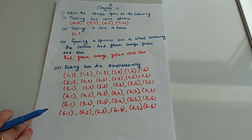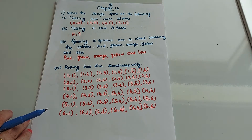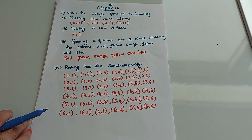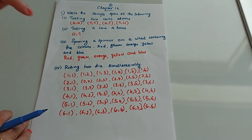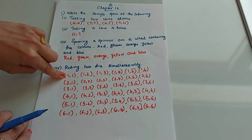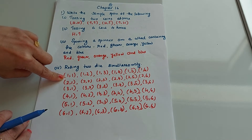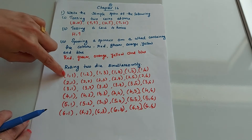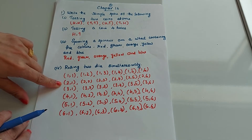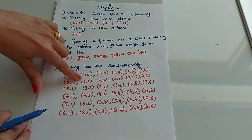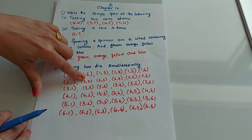Next, rolling two dice simultaneously. You have two dice; when you roll them, the outcomes start from one-one, one-two, and so on. The first number indicates the result on the first die, the second number indicates the result on the second die. So it goes: one-one, one-two, one-three, one-four, one-five, one-six, then two-one, two-two, two-three, and so on.